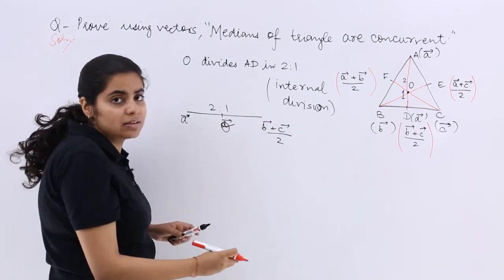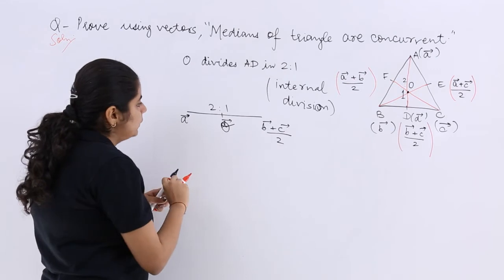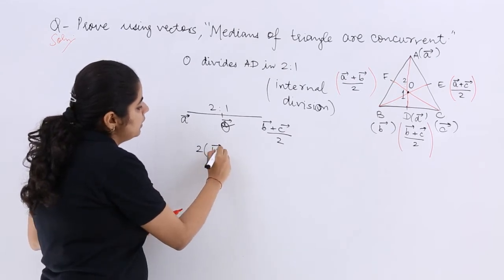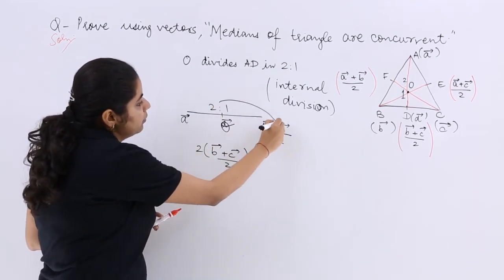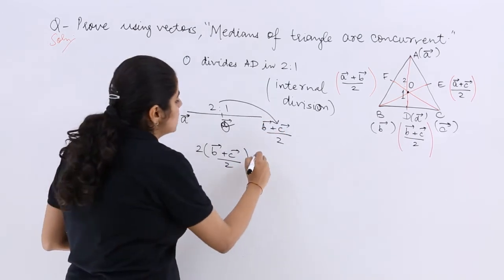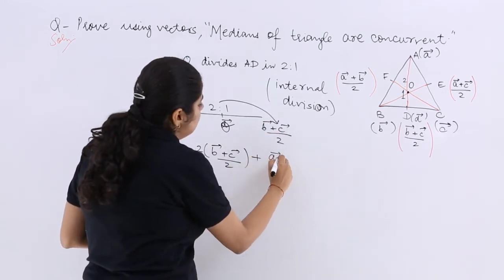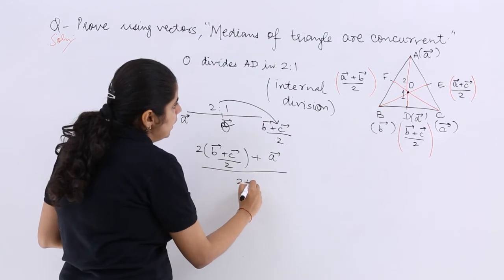Now what is the answer? The answer will be obtained as 2 multiplied by B plus C by 2, because you know the farther the better in case of medians and section formula, plus A vector upon 2 plus 1.